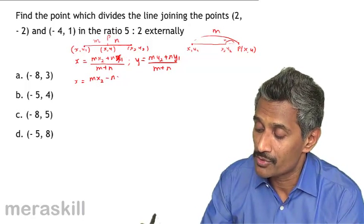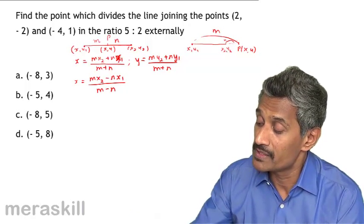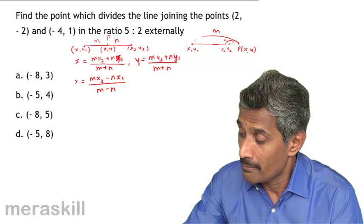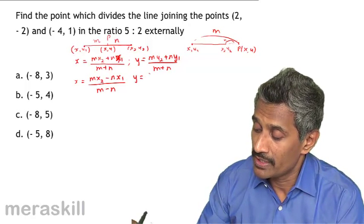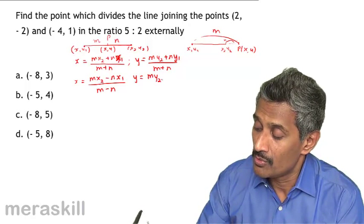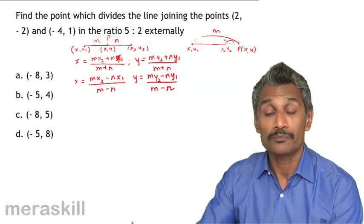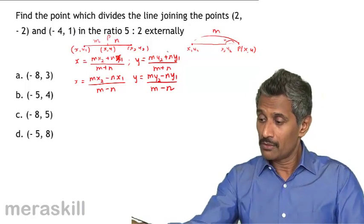So if it is external division, it is M x2 minus N x1 upon M minus N. And the y coordinate would be M y2 minus N y1 upon M minus N. So we apply this one over here.